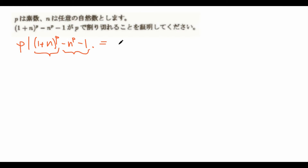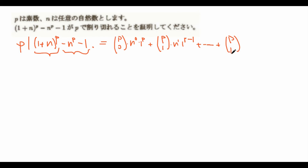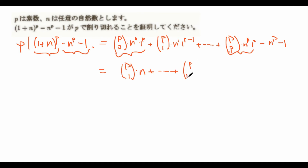So using the binomial theorem, we get that this thing expands with terms p choose 0 times n to the power of 0 times 1 to the power of p, up through p choose 1 times n to the power of 1 times 1 to the power of p minus 1, and so on up to p choose p times n to the power of p times n to the power of p minus 1. After cancellation, the first term equals 1 and the last term equals n to the power of p, leaving us with p choose 1 times n plus ... plus p choose p minus 1 times n to the power of p minus 1. And we want to prove that p divides this thing.